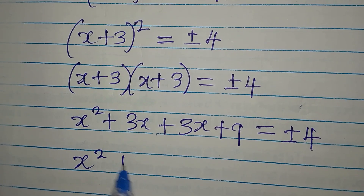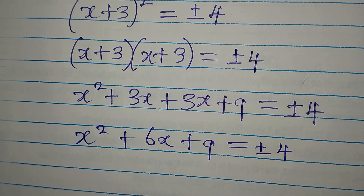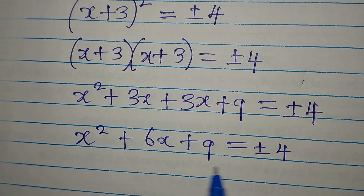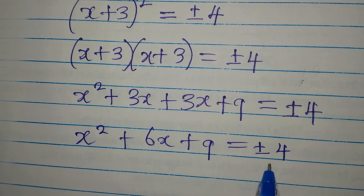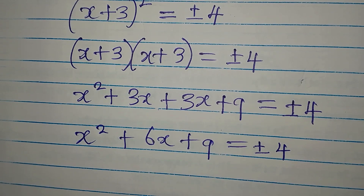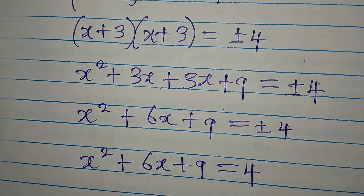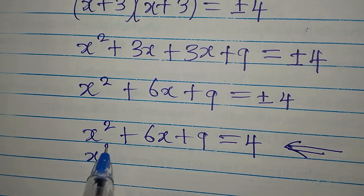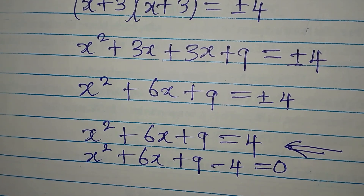Now we have x² + 6x + 9 equals plus or minus 4. What should we do? We're going to write this as two different equations. The first equation will be x² + 6x + 9 = 4. Then the second equation will make this negative 4 on the right, bringing it to the left: x² + 6x + 9 + 4 = 0, giving us x² + 6x + 13 = 0. Wait — x² + 6x + 9 minus 4 gives us 5, so x² + 6x + 5 = 0.